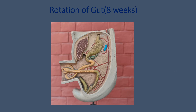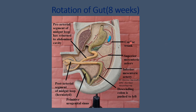Let us look at the labeling now for this specimen. The pre-arterial segment of the midgut loop has now returned to the abdominal cavity. The post-arterial segment of the midgut loop is herniated at this stage. The descending colon is pushed towards the left side. Here we have the celiac trunk, this is the spleen, we have the superior mesenteric artery, the inferior mesenteric artery, and this is the region of the epiploic foramen.